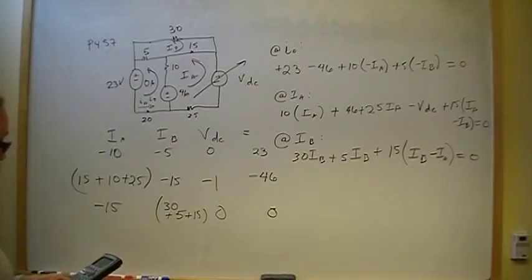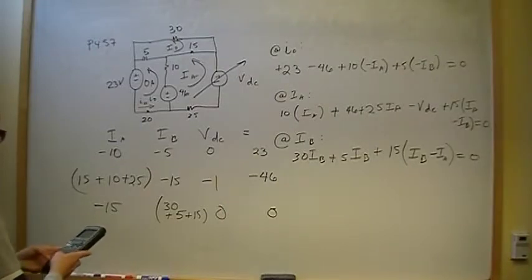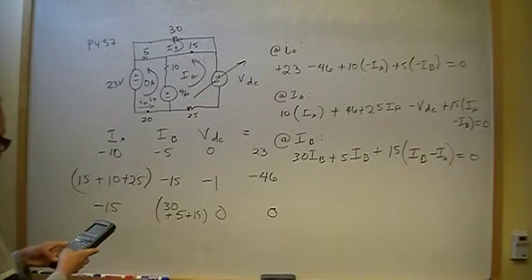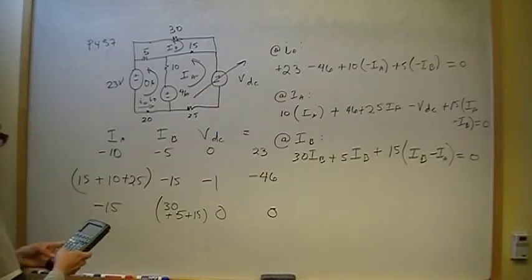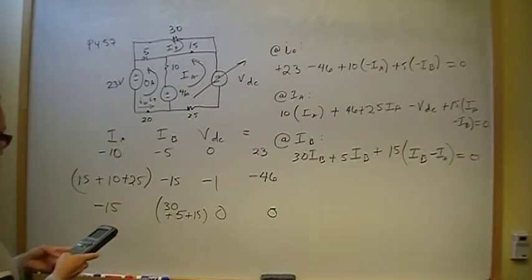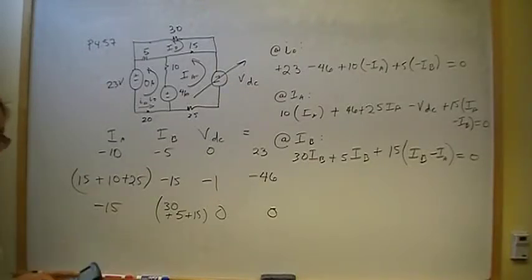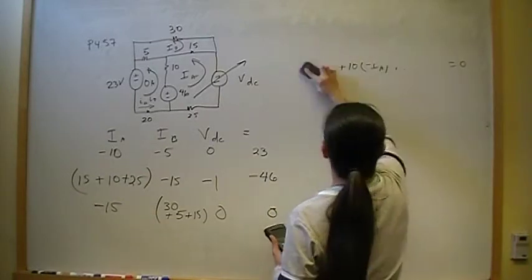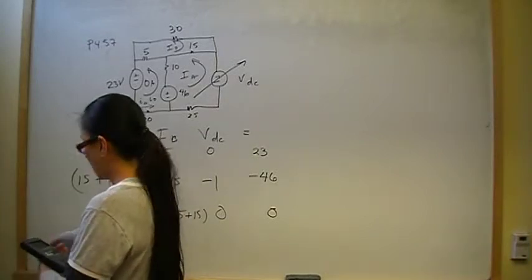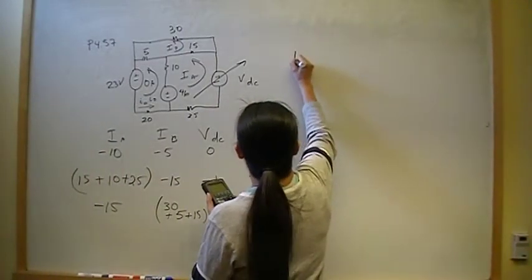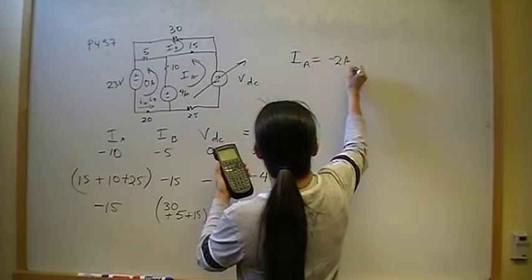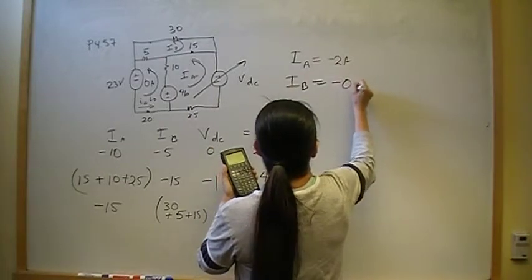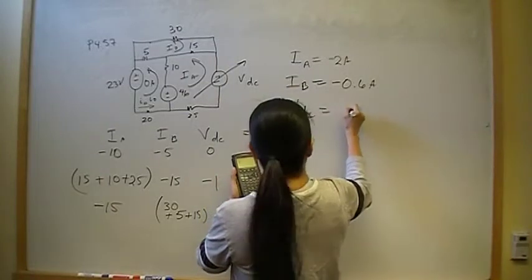We've got three equations and three unknowns. Entering the matrix: negative 10, negative 5, zero, 23; then 15 plus 10 plus 25 = 50, negative 15, negative 1, negative 46; then negative 15, 30 plus 5 plus 15 = 50, zero, zero. Solving it: I_A is negative 2 amps, I_B is negative 0.6 amps, and V_dc is negative 45 volts.